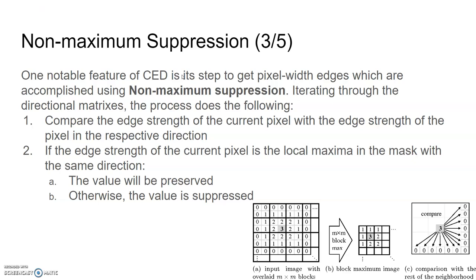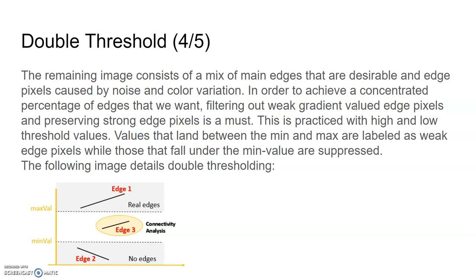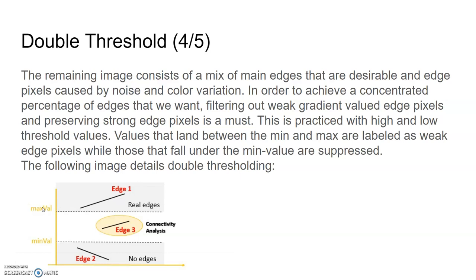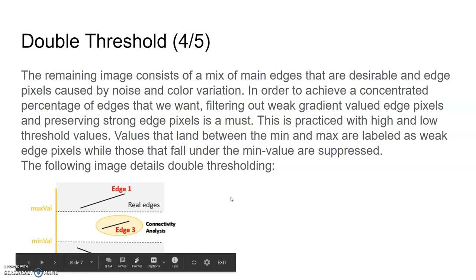Step four is double threshold. The remaining image consists of a mix of main edges and edge pixels caused by noise and color variation. To achieve a concentrated set of desired edges, filtering out weak gradient value edge pixels and preserving strong edge pixels is a must. This is done with high and low threshold values. Values above the maximum are considered real edges. Values below the minimum are suppressed. Values that fall between the minimum and maximum are labeled as weak edge pixels and kept in consideration for the next step.